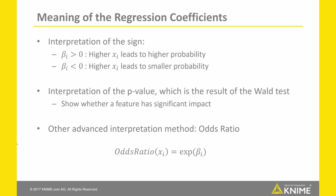Now that we know how the coefficients are calculated, let's talk about how we can use them. Most importantly, we can use them to calculate the probability for our classes, but they also give us more information about the problem. One possibility is interpreting them by their sign: positive values mean higher feature values lead to higher probability for that class, while negative values show that higher feature values lead to smaller probabilities. The Wald test is another approach, providing p-values that tell us whether a feature has significant impact. Another option is the odds ratio, which tells us how the odds change if a feature increases by one unit — calculated as the exponential function to the power of the corresponding coefficient.